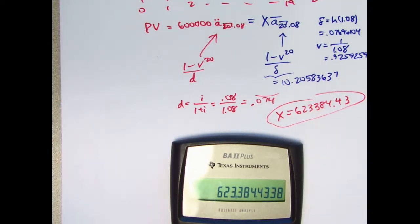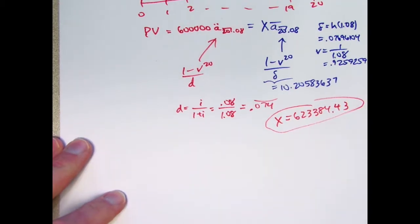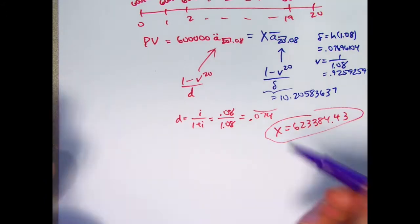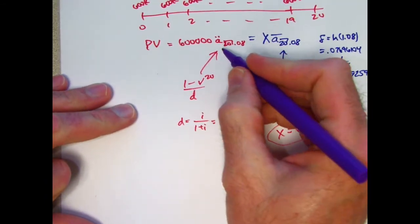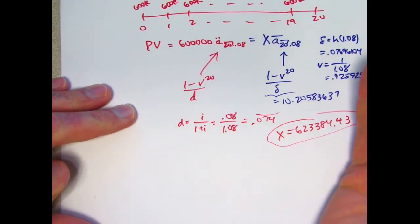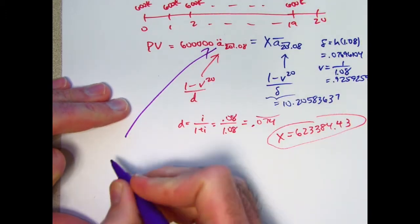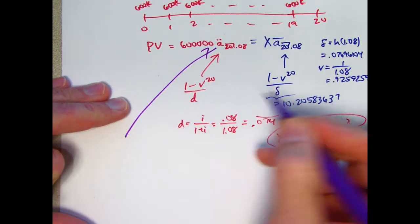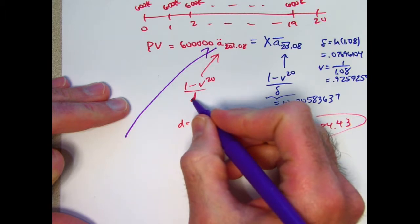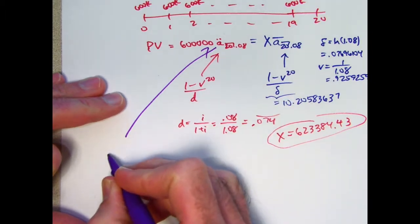What's the quicker way to do this? The quicker way to do this is to realize that both a double dot and a bar are related to a. If you think about it here with a sub 20, we'd be dividing by i. So in fact, you can write a double dot sub 20.08 is the same as